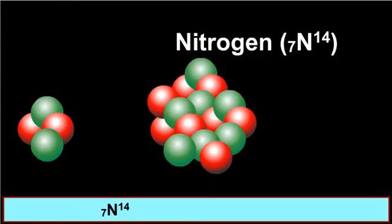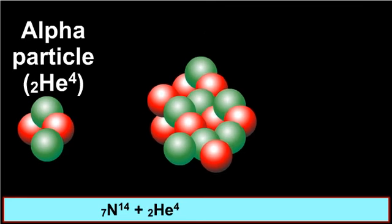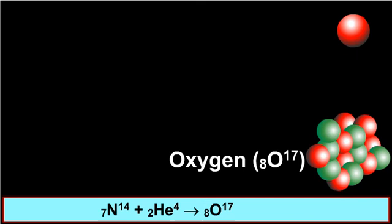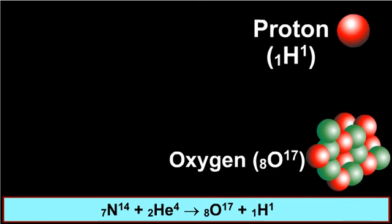When nitrogen was bombarded with alpha particles of sufficient energy, a rare isotope of oxygen and a proton were formed. Nitrogen plus helium gives oxygen plus proton.